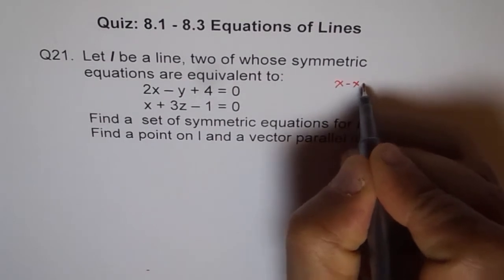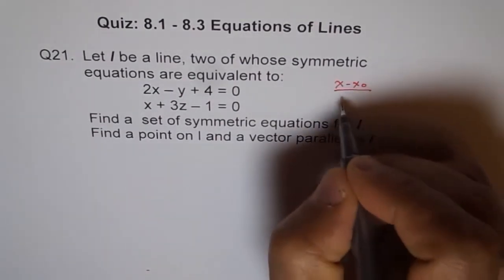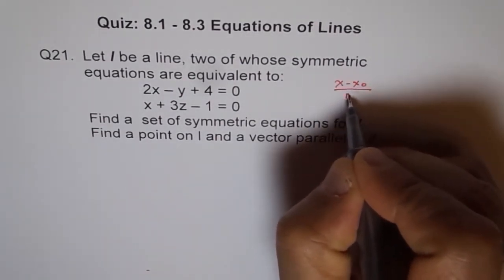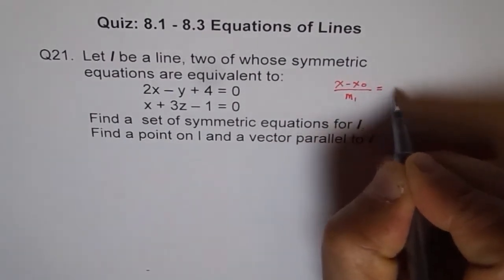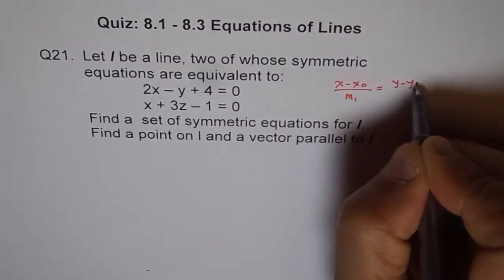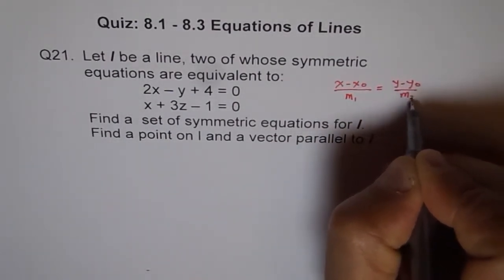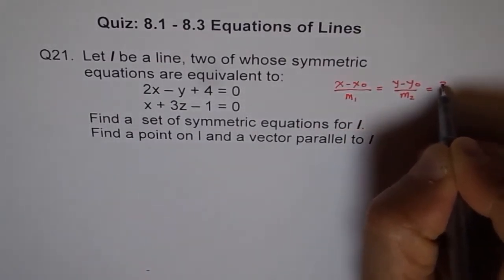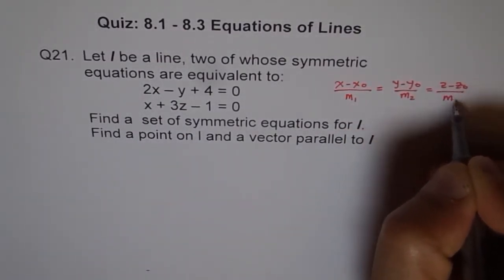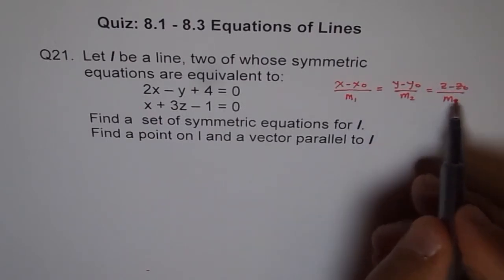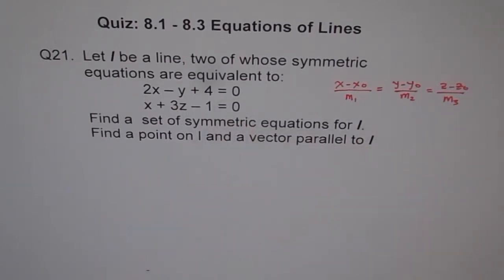You have seen how we write symmetric equation. x minus x0 over m1 equals y minus y0 over m2 equals z minus z0 over m3. We can split it into 3 and write. So we are not very surprised that here we split into 2 and write.